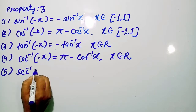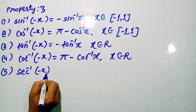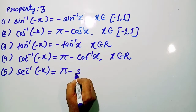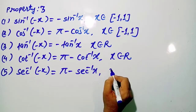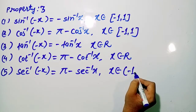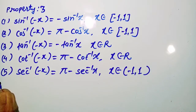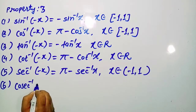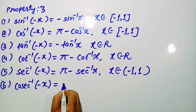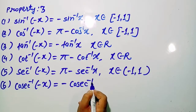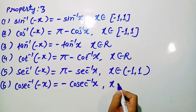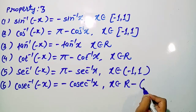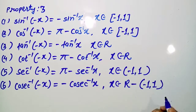Fifth, sec⁻¹(−x) = π − sec⁻¹ x, where x belongs to the open interval (−1, 1). Sixth, cosec⁻¹(−x) = −cosec⁻¹ x, where x belongs to real numbers excluding the open interval (−1, 1).